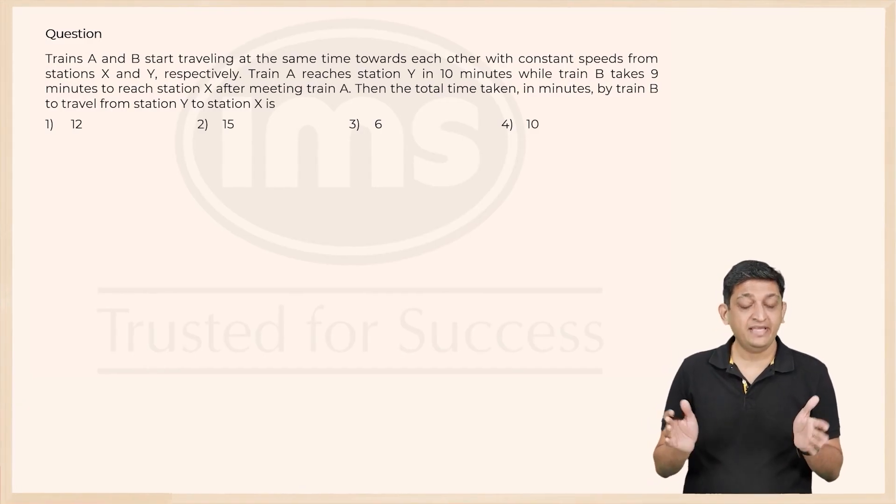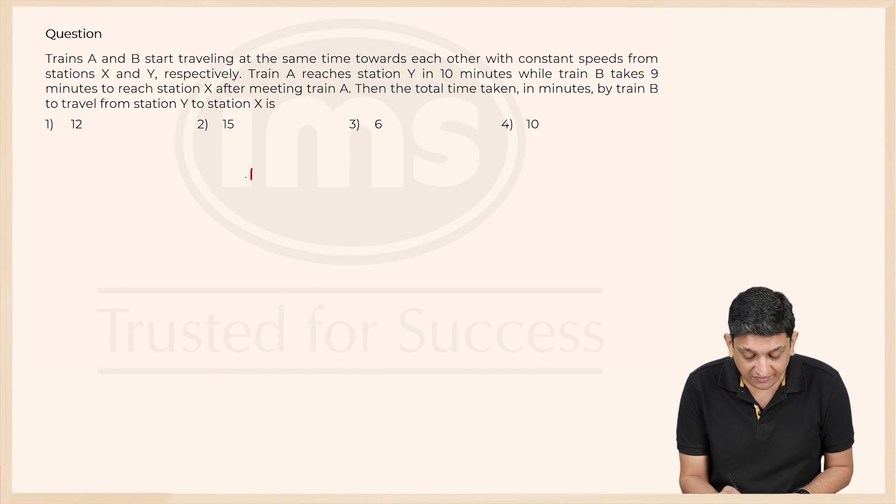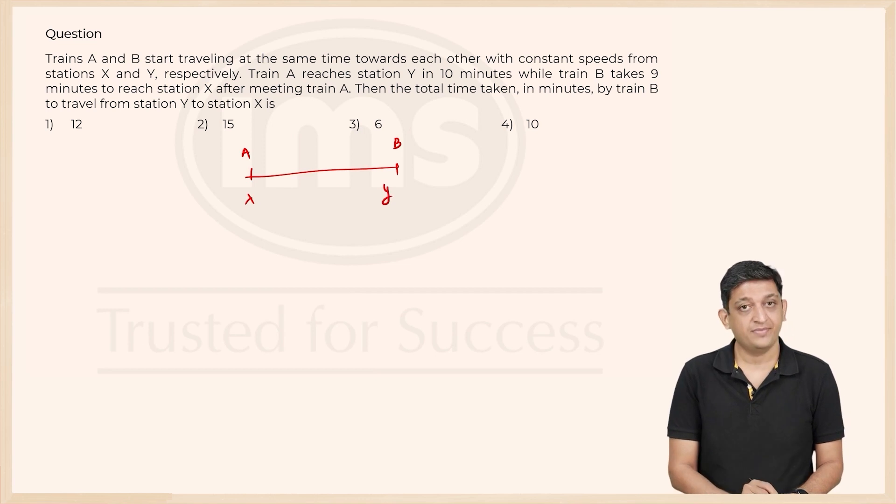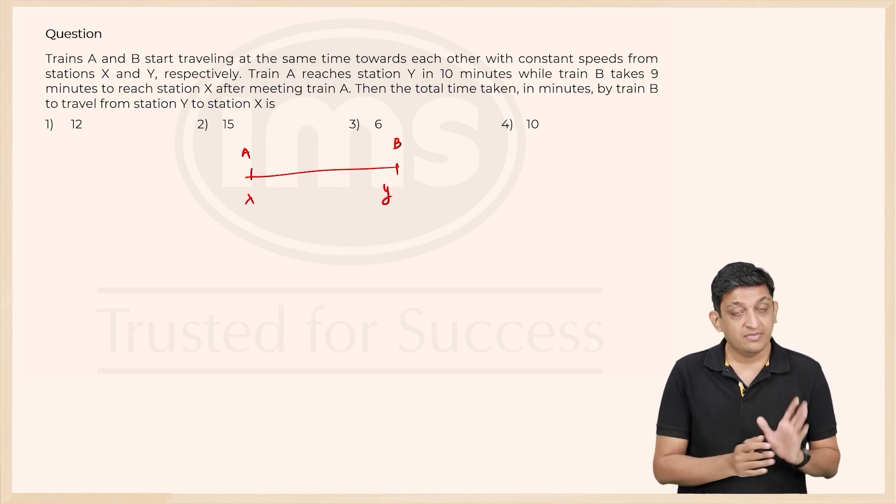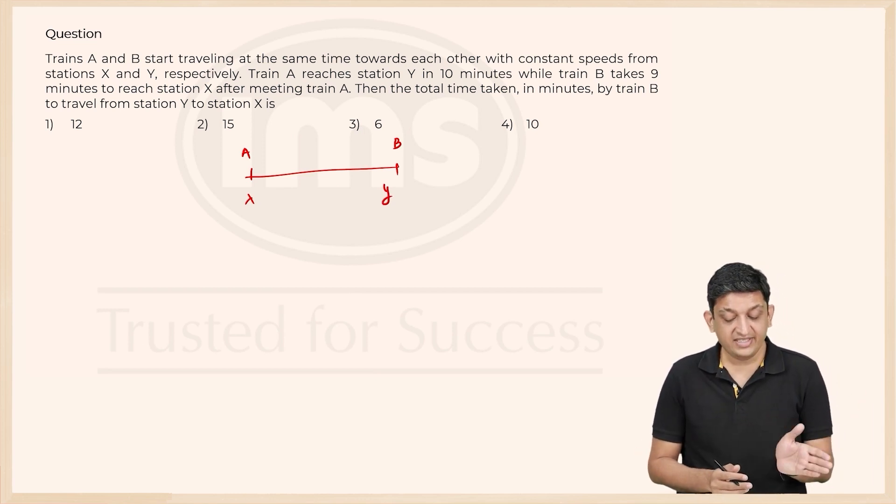In this question, trains A and B start travelling at the same time towards each other from stations X and Y respectively. So A is here, B is here. Let us say this is X, this is Y. They start travelling towards each other.